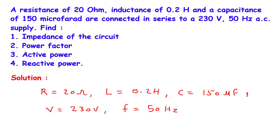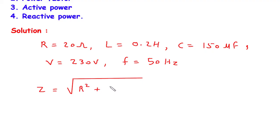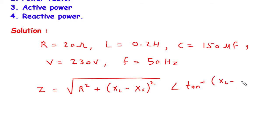Now we have to find the impedance of the circuit, that is Z. So first of all we will directly write the formula: Z is equal to the square root of R squared plus (XL minus XC) whole squared, at an angle of tan inverse of (XL minus XC) divided by R. Now before putting the values, we must need the values of XL and XC.